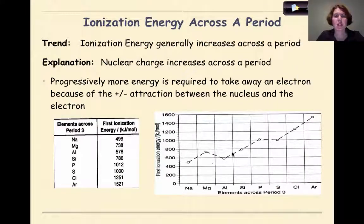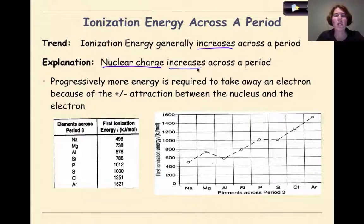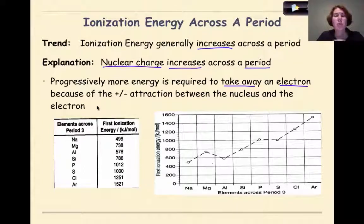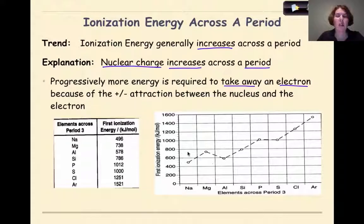Now let's look at ionization energy across the period. Ionization energy is generally going to increase across the period. The explanation for this is that the nuclear charge, or the number of protons inside the nucleus, will increase across the period. As you go from sodium to magnesium to aluminum and so on, we're adding a proton inside the nucleus of each element. So progressively more energy is required to take away an electron because of the positive-negative attraction between the nucleus and the electrons in that outermost shell. Based on the data for period 3, as we go from sodium to argon, the ionization energy values are going to increase dramatically.